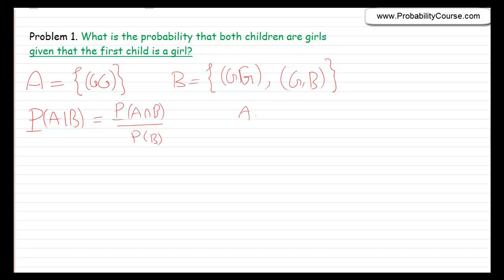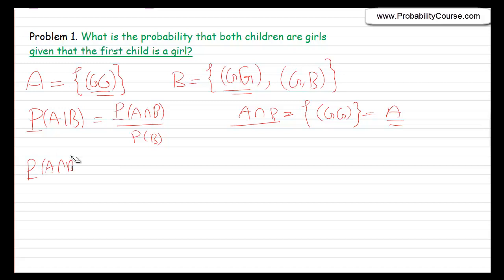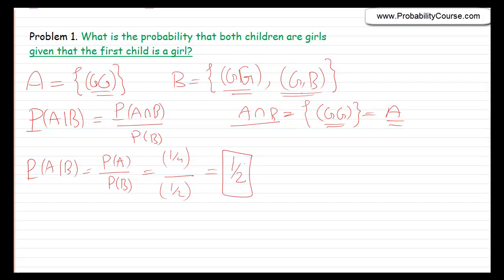The general formula for P(A|B) is P(A and B) divided by P(B). The only element common to both A and B is girl-girl, so A ∩ B = A. Therefore P(A|B) = P(A) / P(B). P(A) = P(girl-girl) = 1/4. P(B) has two elements: 1/4 + 1/4 = 1/2. So the probability is (1/4) / (1/2) = 1/2.